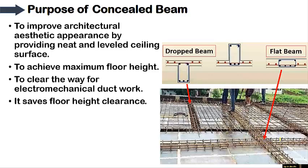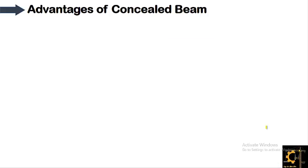Looking at the cross sections, a drop beam is dropped from the slab and is visible from beneath. An inverted beam is also visible. In contrast, a flat beam or concealed beam, as you can see here, lies entirely within the slab and cannot be seen from below.